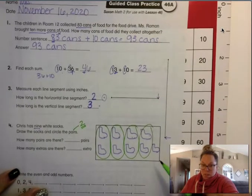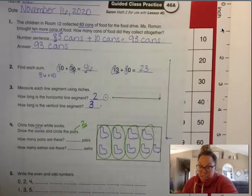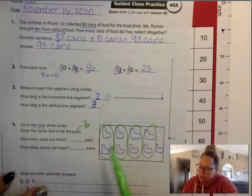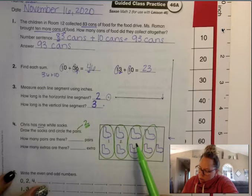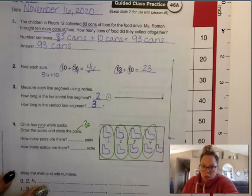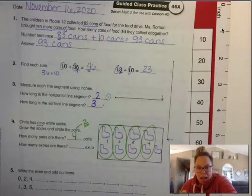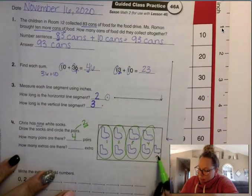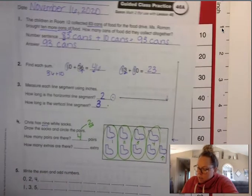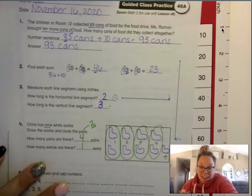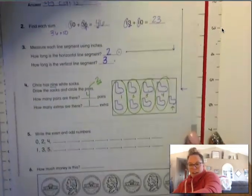I have a lonely sock. Can I circle it? No, because it doesn't have a match. Only circle if it has a match. So how many pairs are there? One, two, three, four. There are four pairs. And how many extras are there? That's this guy right here. There is one extra sock. That's where that goes.